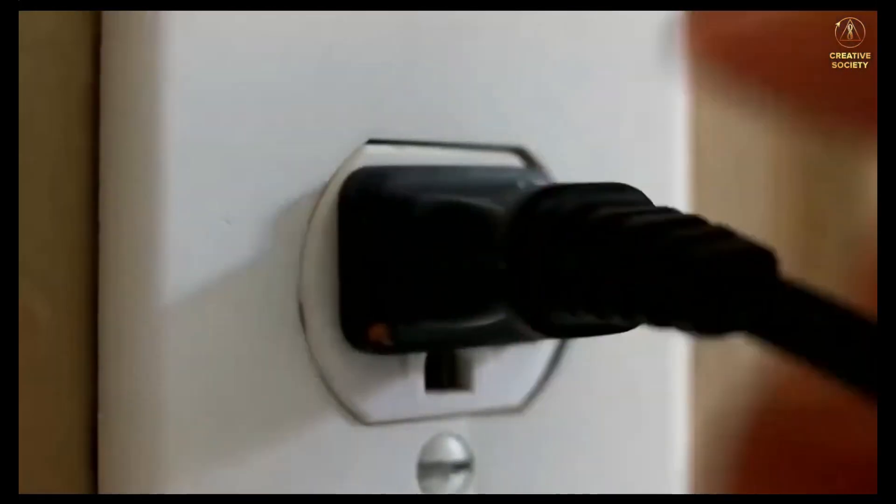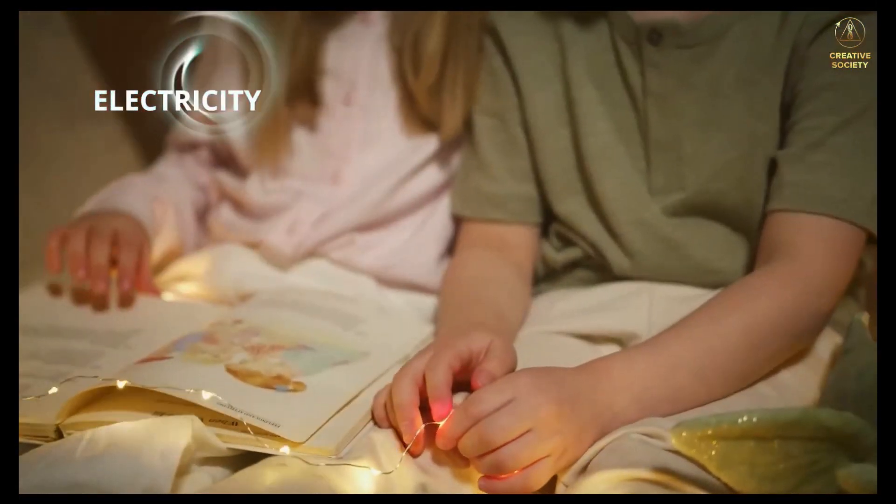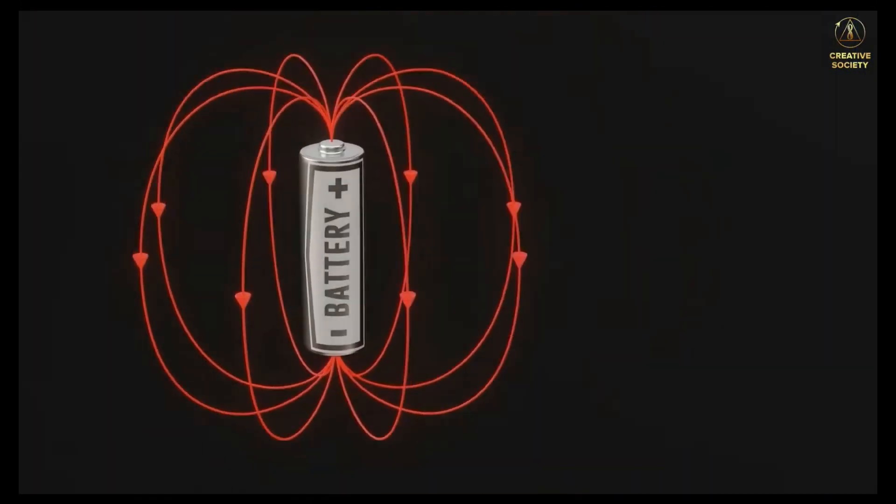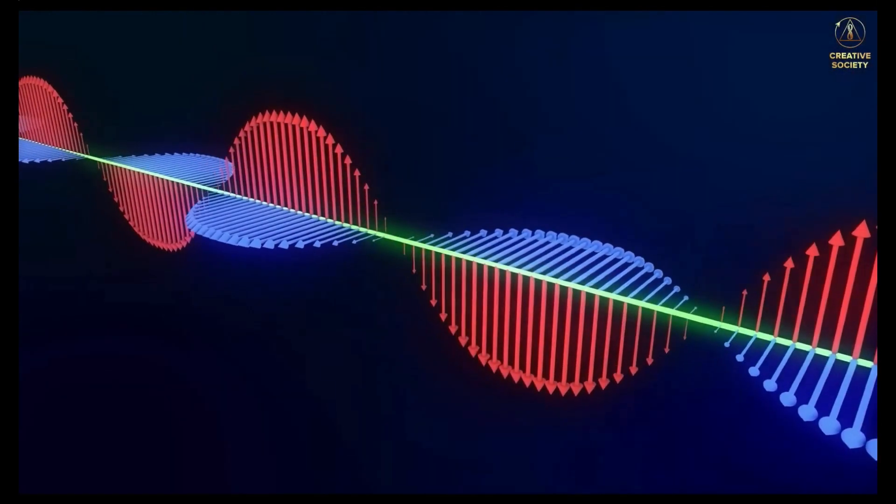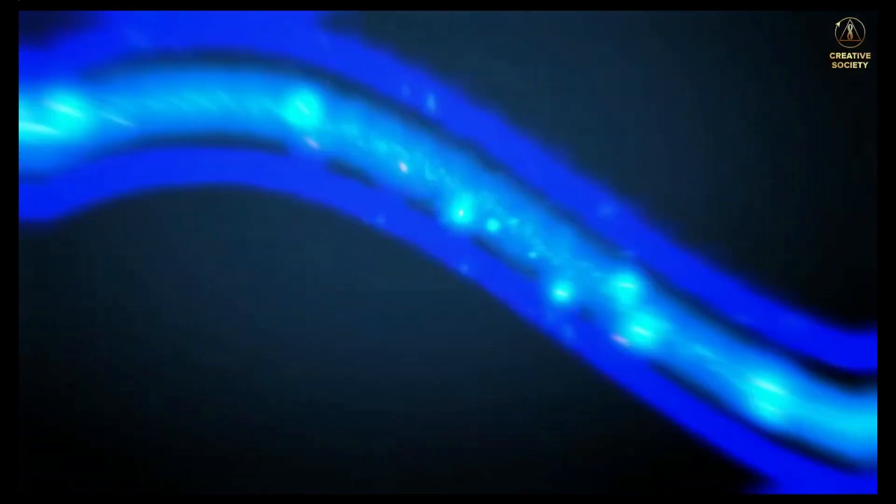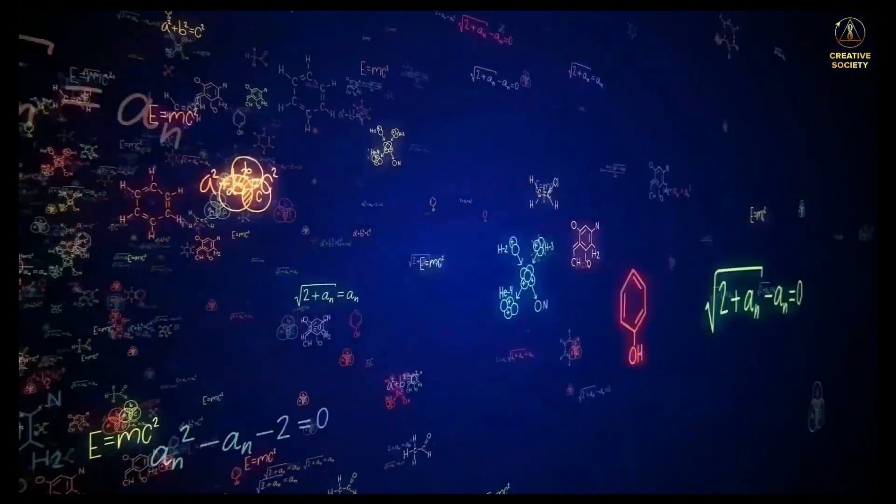Another phenomenon, the nature of which our hypothesis explains, is electricity. Today, we all use electricity. We know that there is direct and alternating current. That there are electromagnetic waves and static electricity. But what electricity is in its essence, modern science cannot explain.